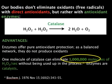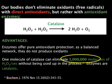When our bodies don't eliminate free radicals within the cell, we need the equation that is going to work. In the presence of catalase — an indirect antioxidant produced by your cells — when you have hydrogen peroxide in the presence of catalase, it neutralizes it into water and oxygen. It actually neutralizes these free radicals within the cell by this enzyme that your body makes. We now know that enzymes offer pure antioxidant protection as a balanced network.